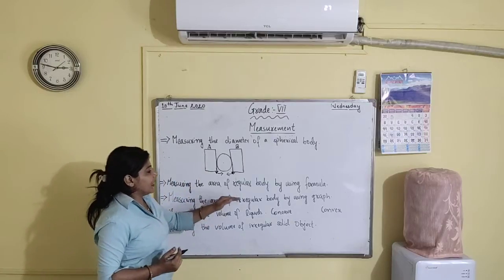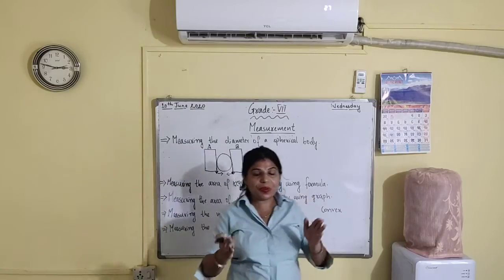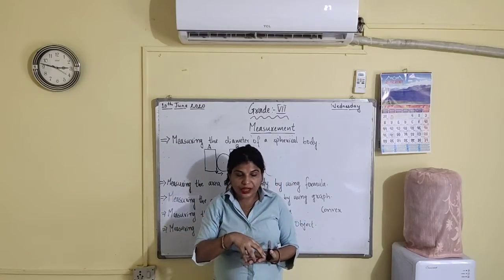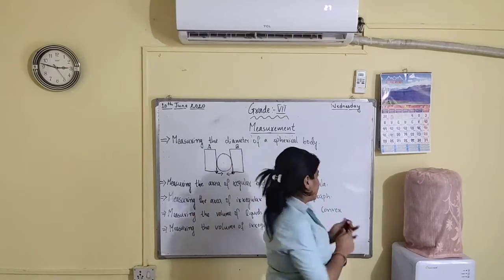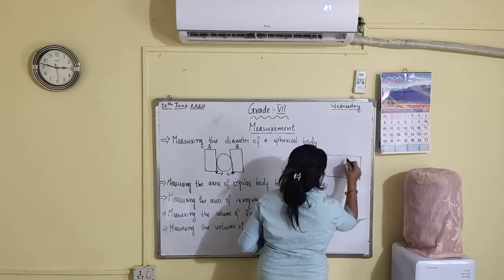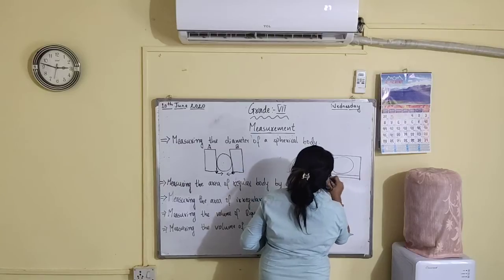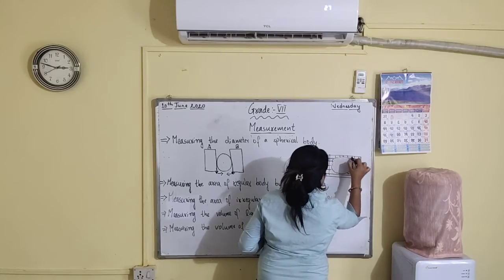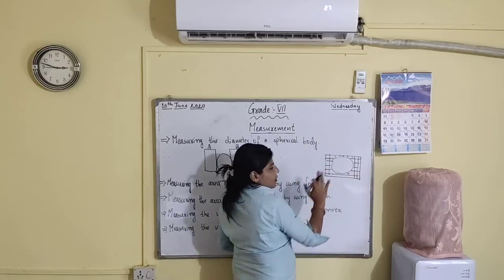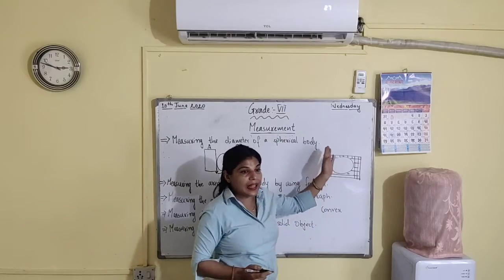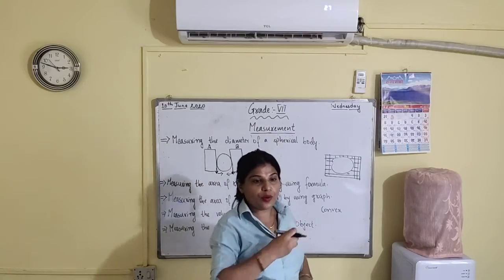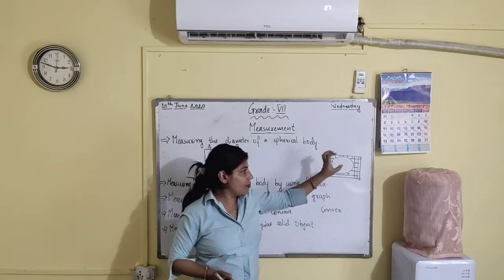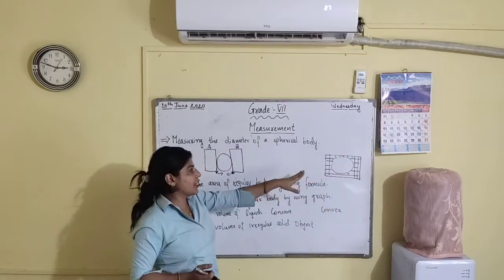Next is measuring the area of an irregular body by using a graph. Here, we need to use a graph paper. What you are going to do is take a graph paper, place the object on it, and draw the outline of the object. You know how the graph paper contains square boxes. After drawing the outline, count how many full squares or more than half squares are there. Less than half, you will ignore. Half or more than half or full squares, you will count. The total number of squares will give the area of the object.